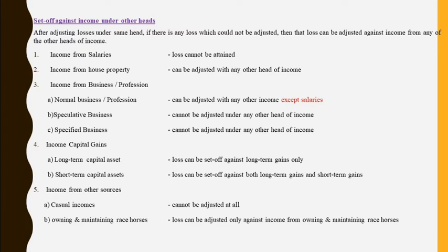Now let us see the inter-head provisions. Income from salaries — loss cannot be attained, so there is no question of set-off. Income from house property — if you do not have sufficient income to adjust the loss within the head in that year, that loss can be brought outside and adjusted with any other heads of income. Income from business or profession — normal business or professional loss can be adjusted with any other income except salaries. That means a business or professional loss can be adjusted from house property, capital gains, or other sources, but it cannot be adjusted with salary income. Specified business and speculative business loss cannot be adjusted outside the head of income at all.